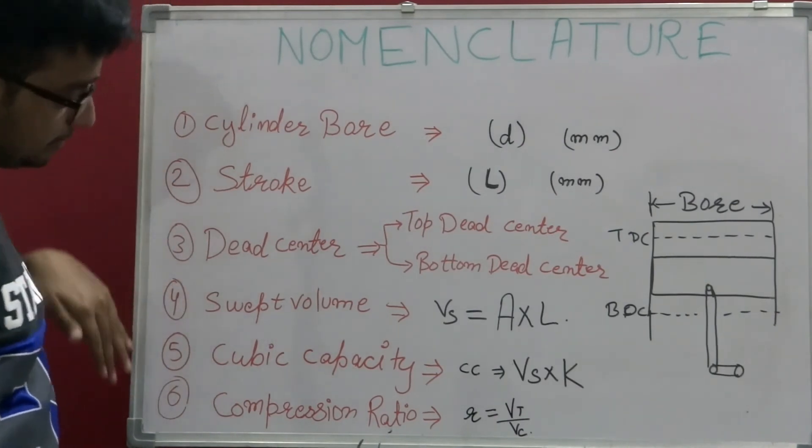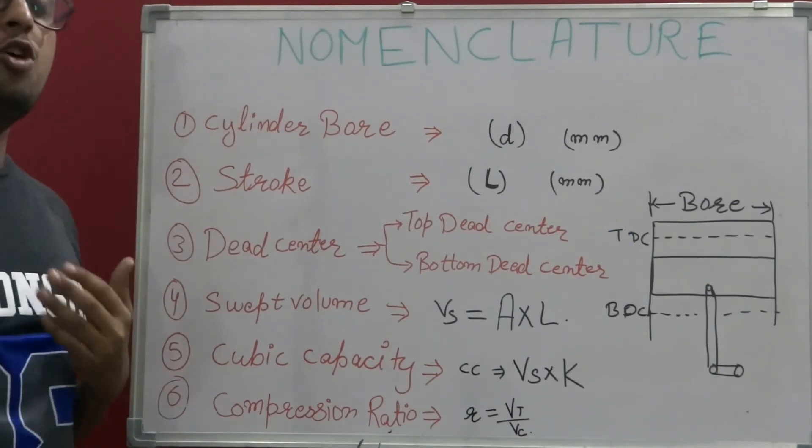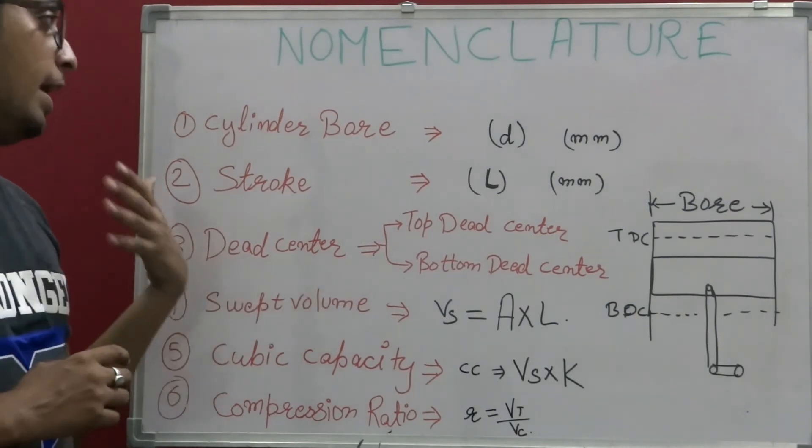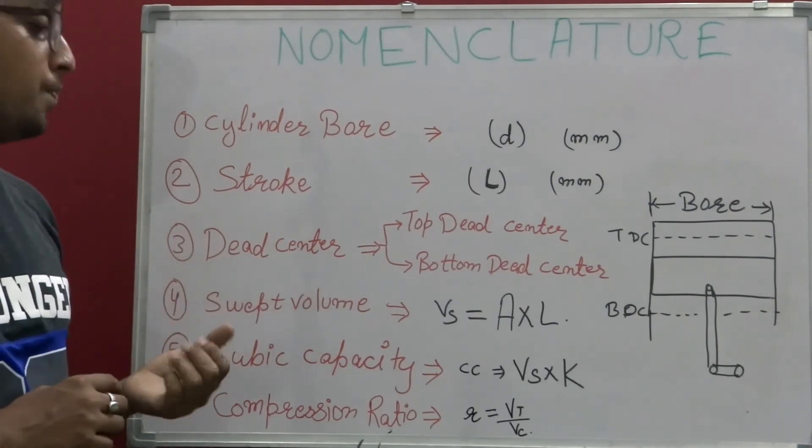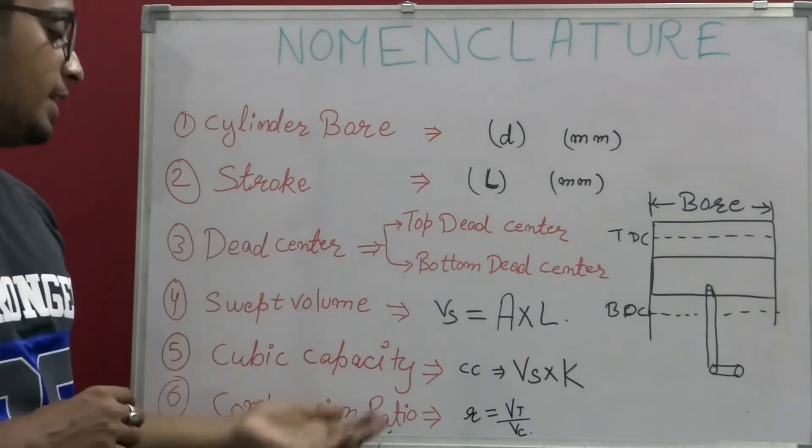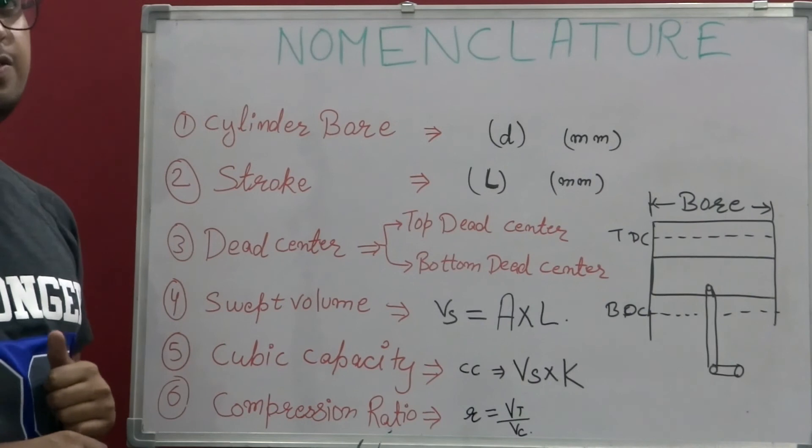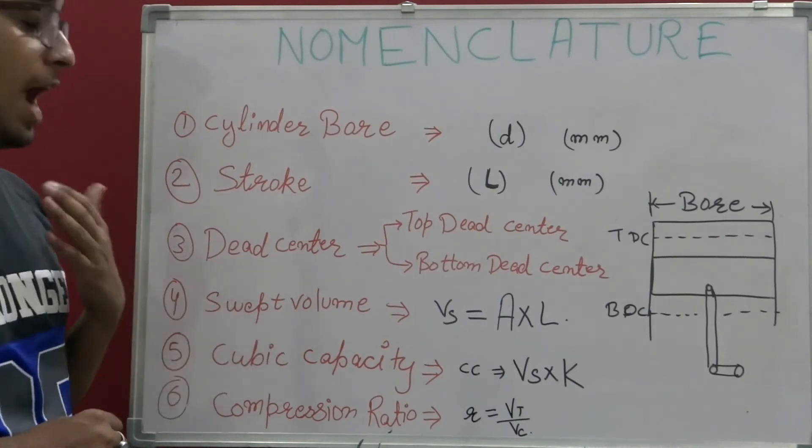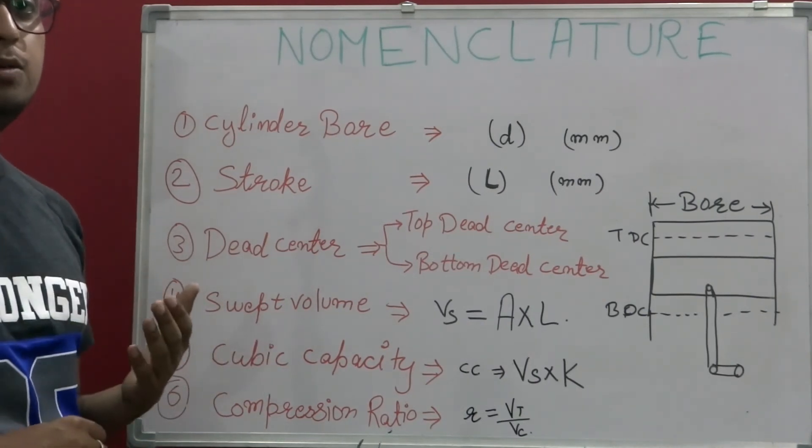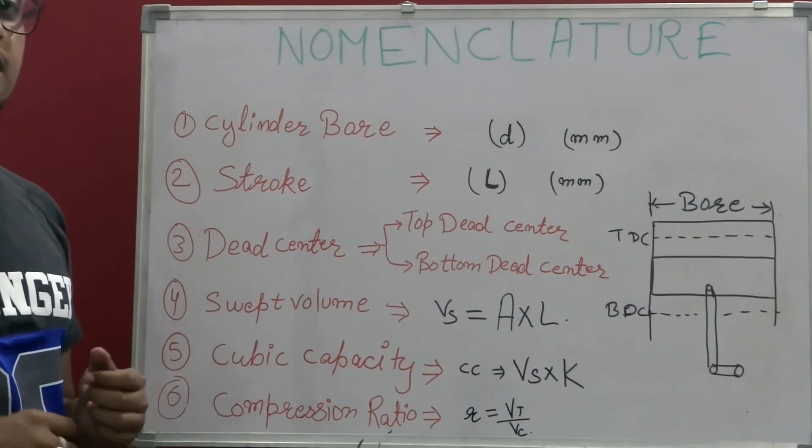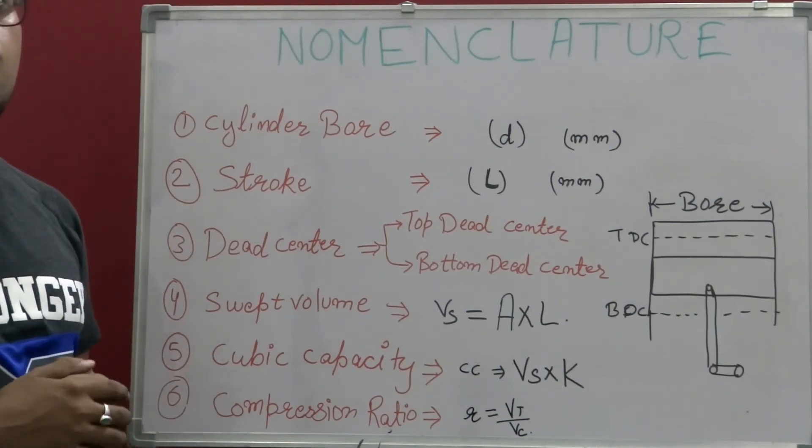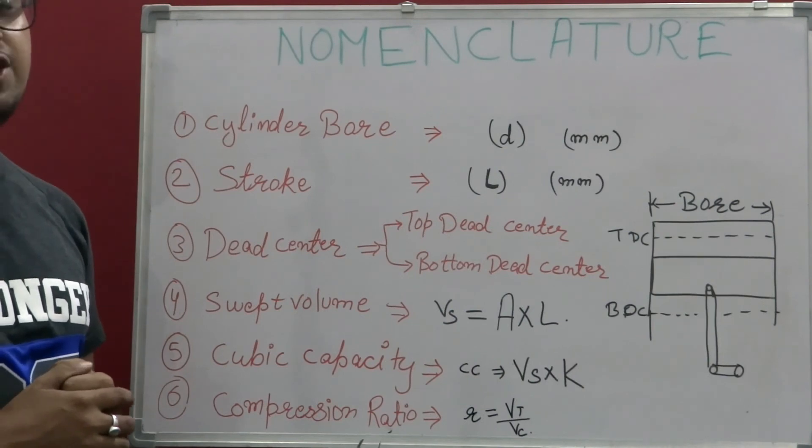These six nomenclatures are the most commonly used nomenclatures for an IC engine. Hope you understand them well. If you have any query, comment in the section down below. If you like this video, give it a thumbs up. And if you want to know more about how cars work, subscribe to my channel Turk and Turbo by clicking the logo on the left hand side. Thank you.